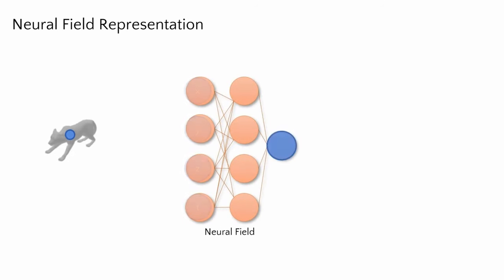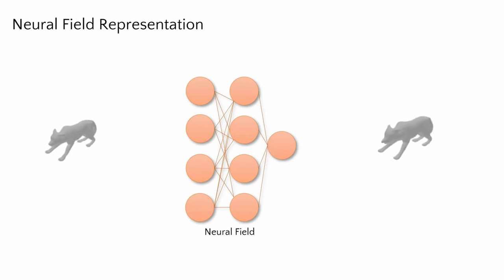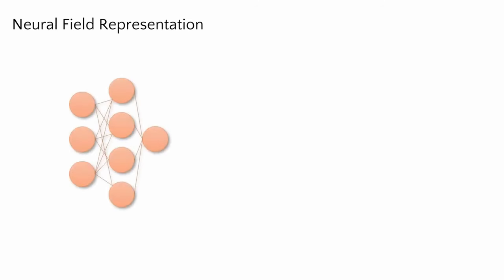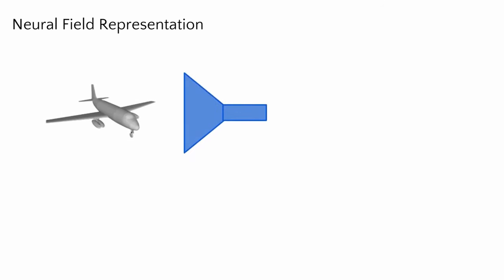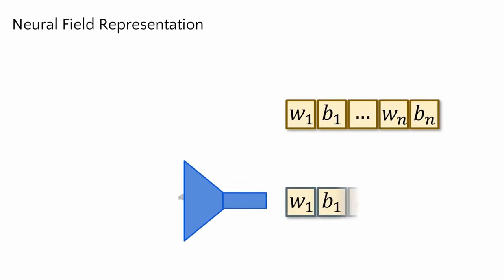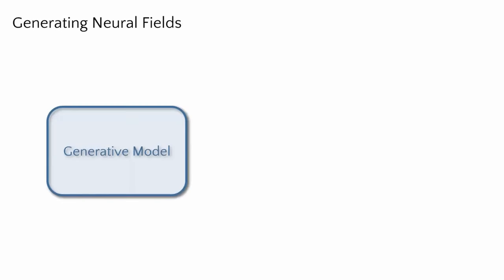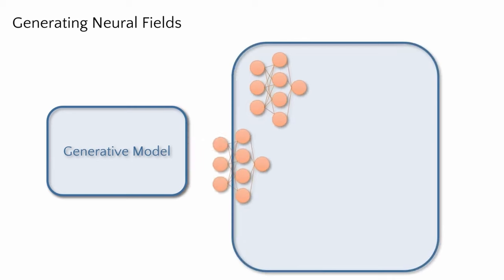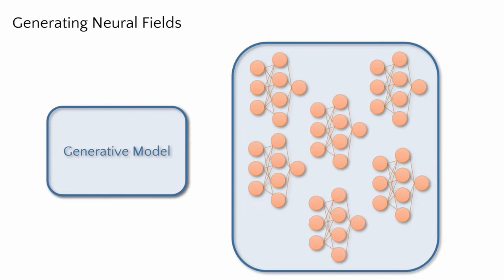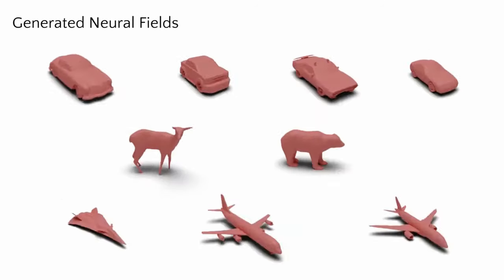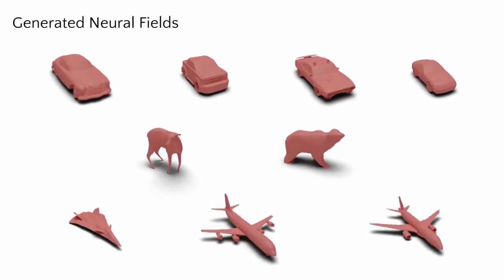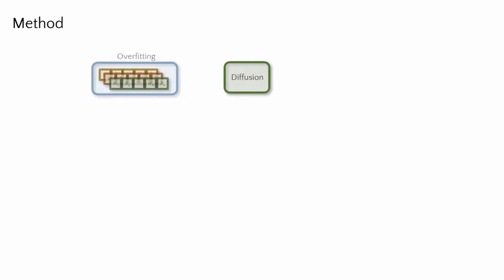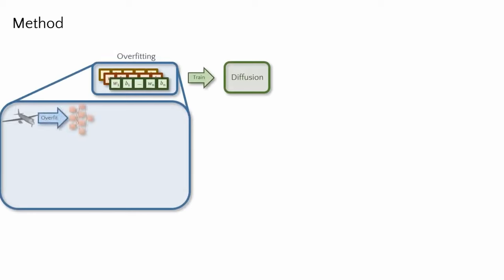4D deforming shapes can be similarly represented by neural fields, where 4D coordinates are input into an MLP outputting shape occupancy over time. These neural fields present a compact encoding of high-dimensional surface data as a set of MLP weights and biases. So, complex 3D and 4D shapes can be efficiently represented as vectors of MLP parameters. Thus, rather than modeling raw 3D or 4D surface information, we propose a generative model for neural fields through a diffusion process. Since we characterize surfaces as their optimized MLP parameters, we can generate both 3D and 4D shapes simply as their neural field MLPs.